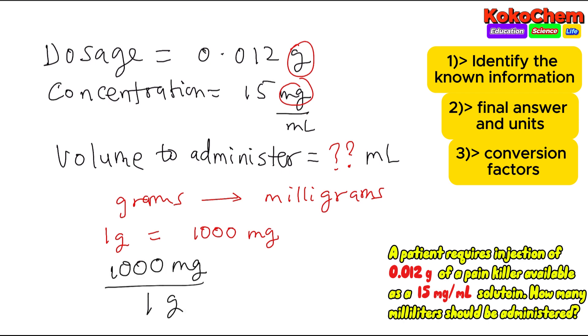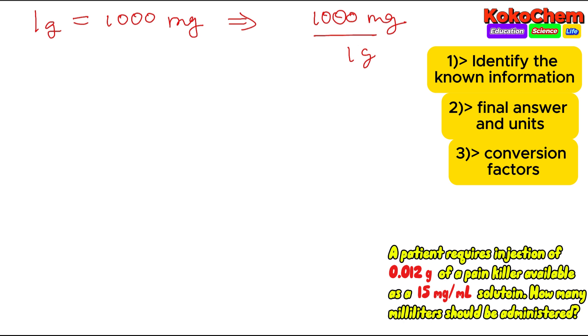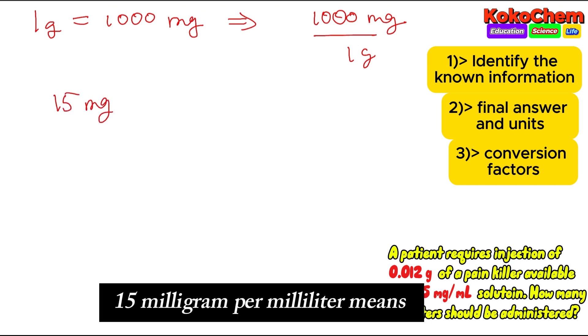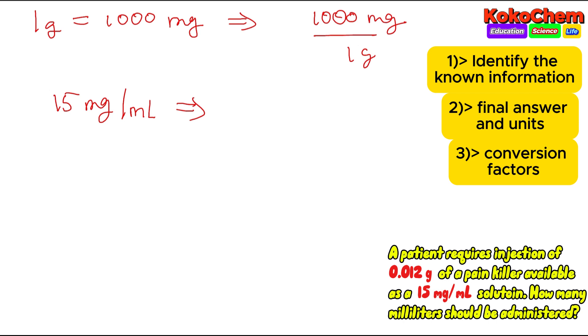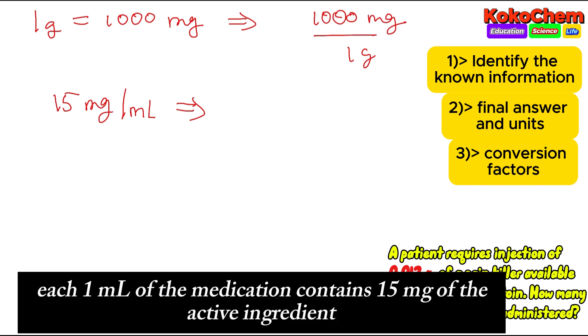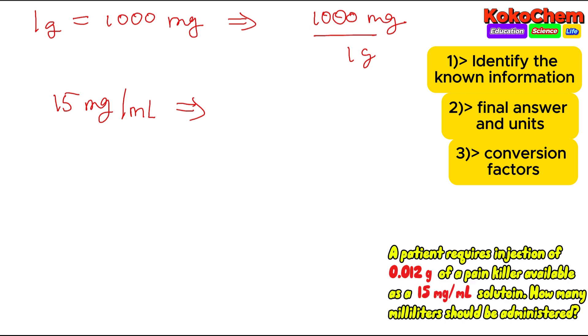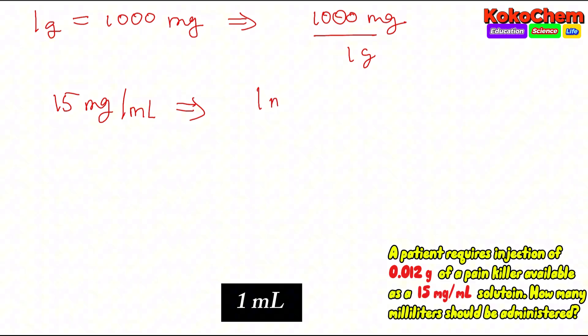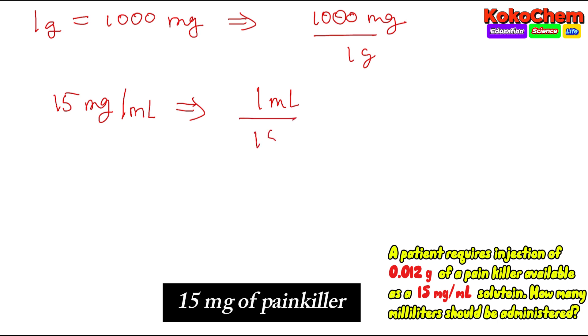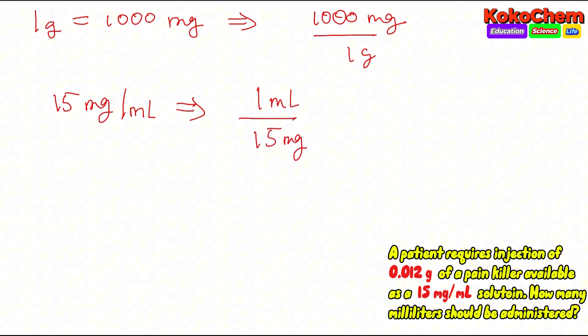Now in the question we have 15 milligram per ml. This is one ml, meaning one milliliter contains 15 milligrams of painkiller. Now we can set up the table.